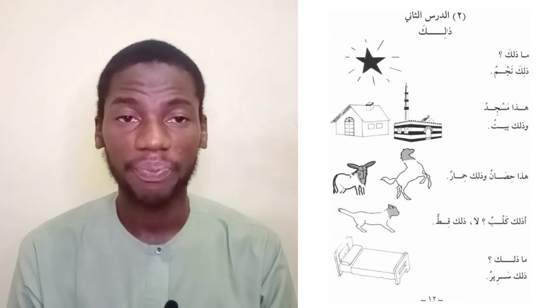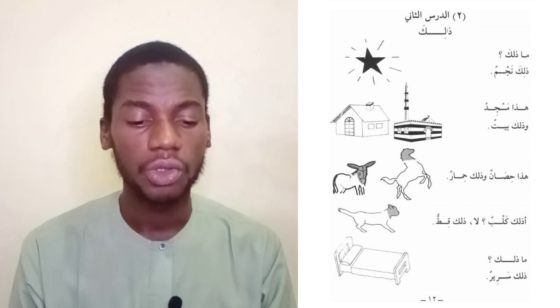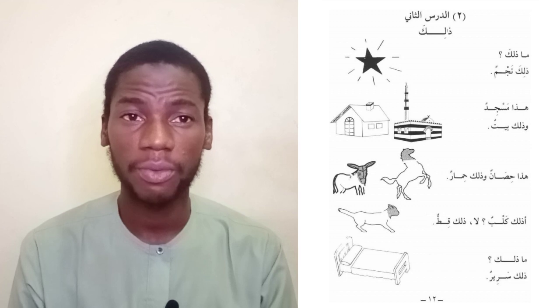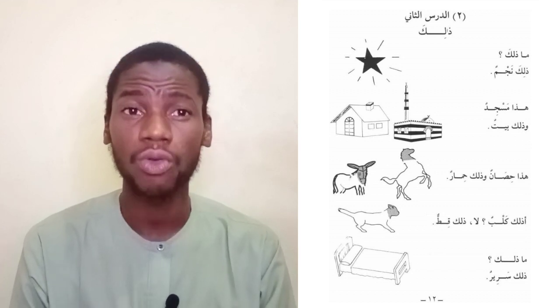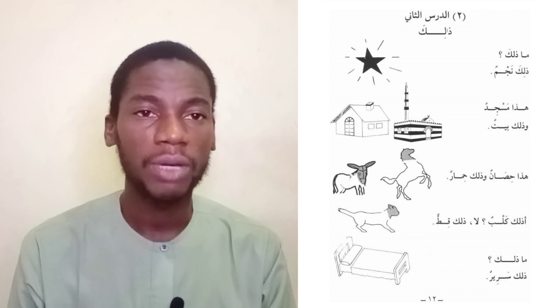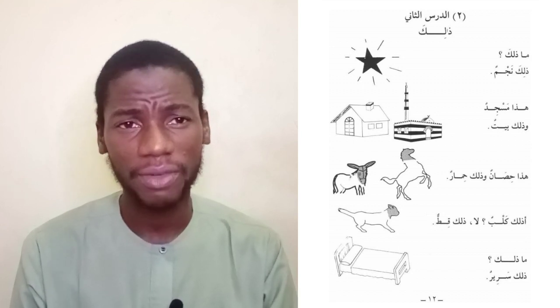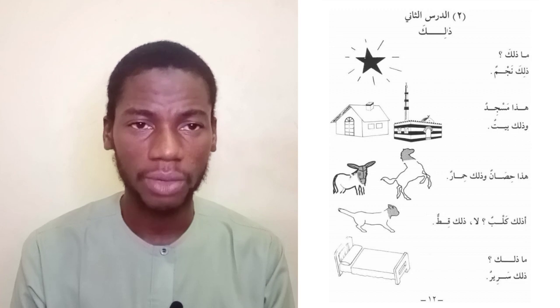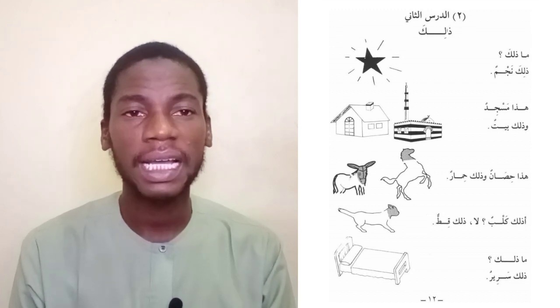So we have 'ma zalika'. In the previous lesson we learned that 'hatha' is an ism al-isharah, a demonstrative pronoun used to point at something that is close, singular, and masculine. Today we look at 'zalika', which is just like 'hatha', but the difference is distance — 'hatha' is for what is close while 'zalika' is for what is far.